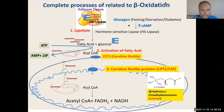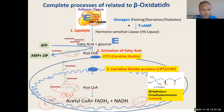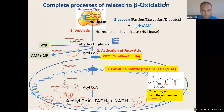The fatty acid has to be in the mitochondria for further oxidation into Acetyl-CoA, and then FADH₂ and NADH. Inside the liver, the product is Acetyl-CoA. In the liver, this Acetyl-CoA will form ketone bodies. Elsewhere — such as in muscle — this Acetyl-CoA will form CO₂ through the TCA cycle. In muscle it forms CO₂; in liver it forms ketone bodies.